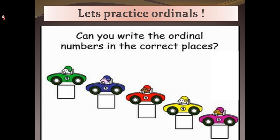Can you write the ordinal numbers in the correct place? Here you can see different cars: a green, a blue, a red, a yellow, and a purple. Now the green car is first, so an ordinal number tells you the position. So the green car is first, the blue car is second, the red car is third.